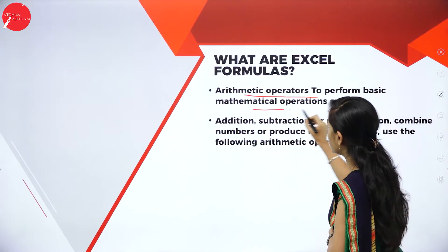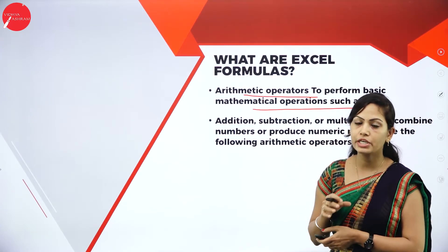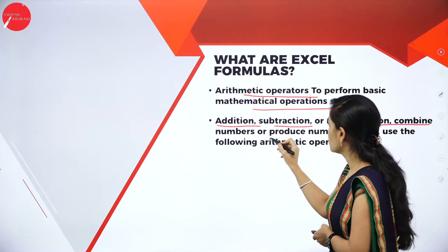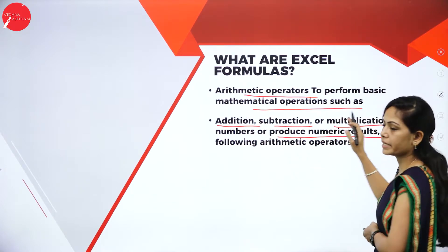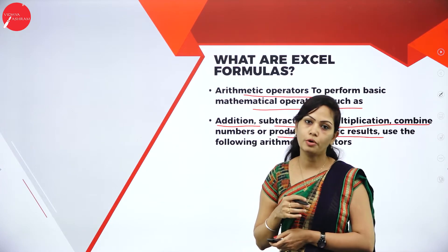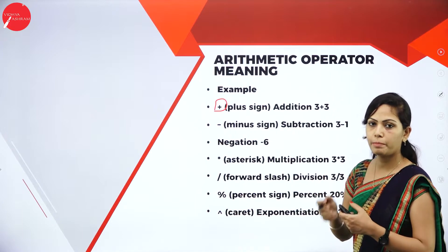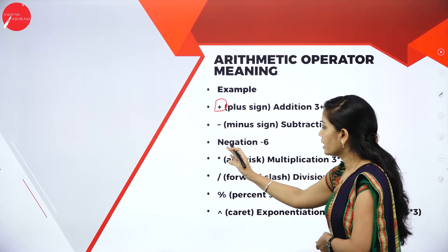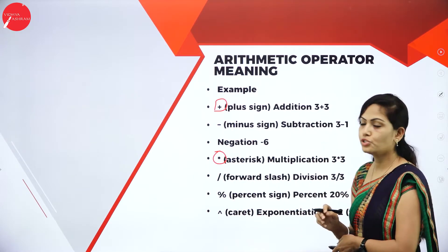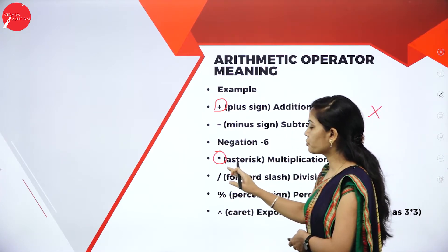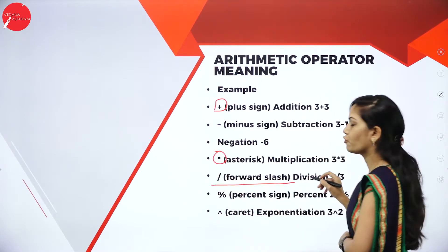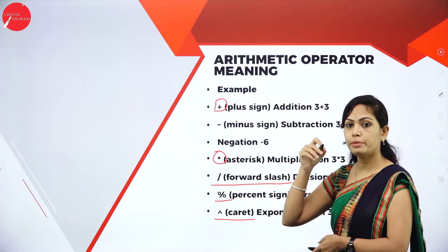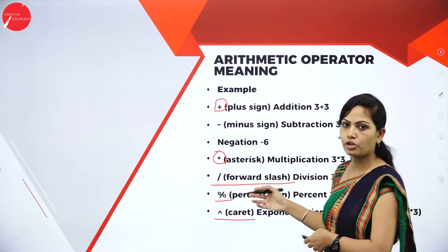What formulas can we use in Excel? Arithmetic operators perform basic mathematical operations such as addition, subtraction, multiplication, and division, and they produce numeric results. For multiplication, we use the asterisk (*) — in computers, asterisk is used instead of the usual symbol. For division of numbers, we use the forward slash (/). You can also find percentage and exponential values, like 3^2, 3^9, or 2^4, using these arithmetic operations in Excel formulas.